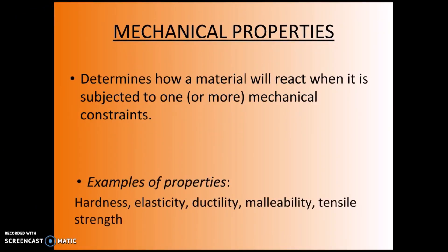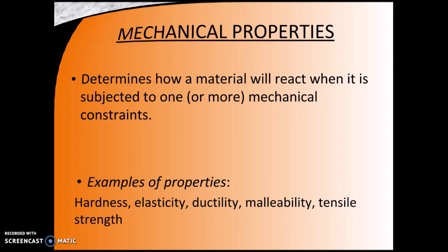Examples of properties that different materials might have are hardness, elasticity, ductility, malleability, and tensile strength.